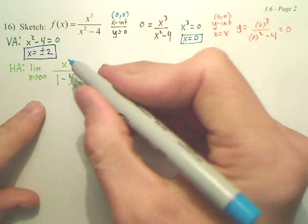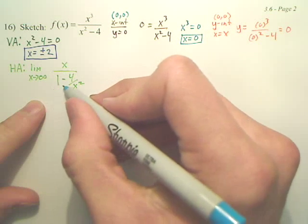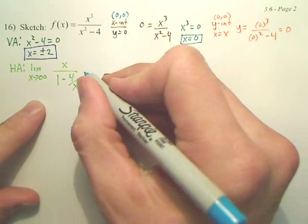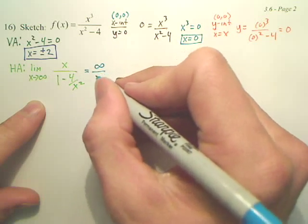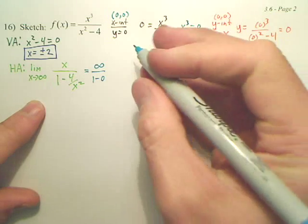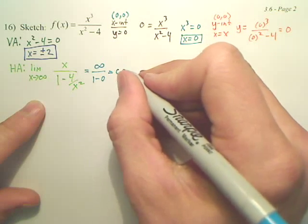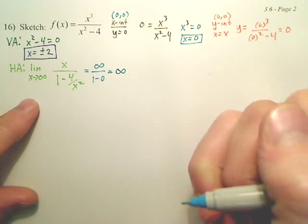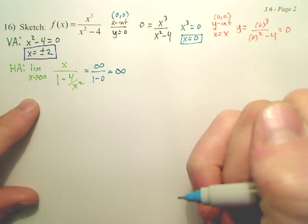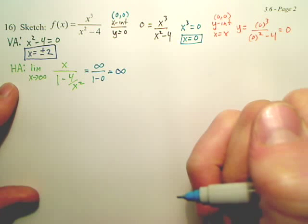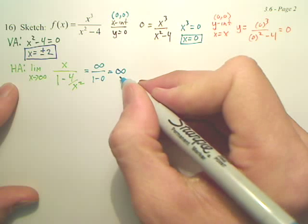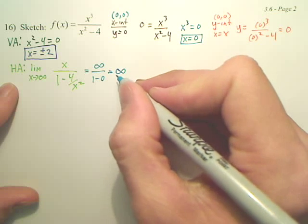When I plug in infinity, I get infinity over 1 minus 0, which is infinity over 1. So as x approaches infinity, we get infinity. Now, is there a horizontal asymptote? No. But does that tell us about the end characteristic of the graph? Yes. It tells you a lot.